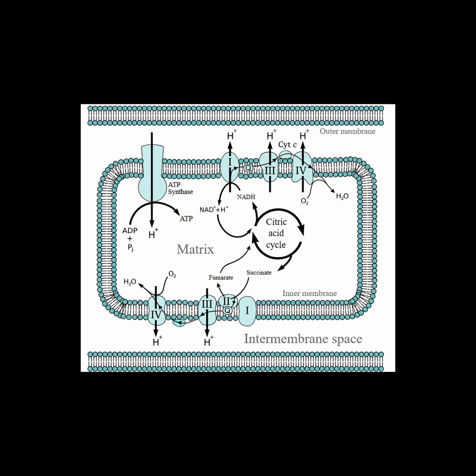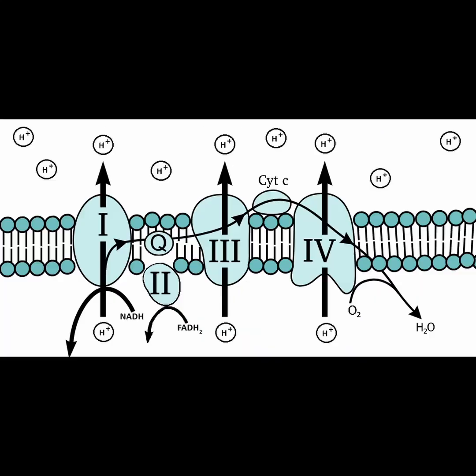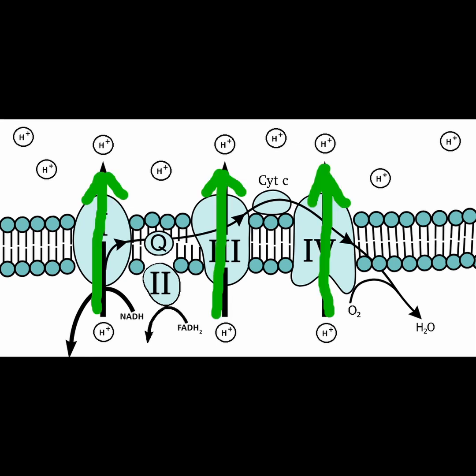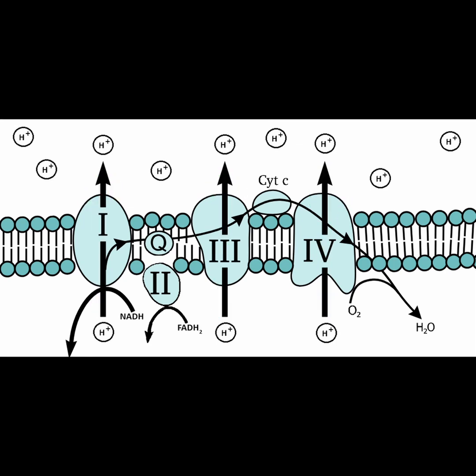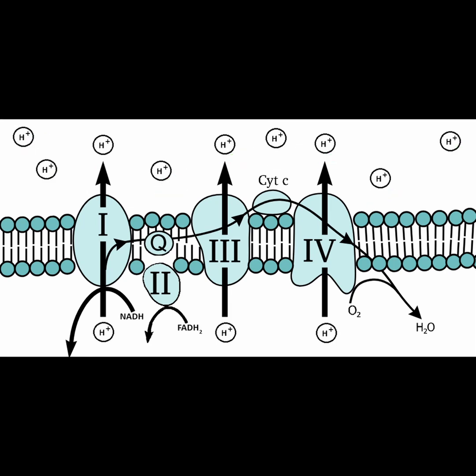One part of this process is called electron transport, which involves releasing energy to pump protons out of the mitochondrial matrix. These protons are used to set up a proton gradient across the inner mitochondrial membrane, which will power the second part of the process.